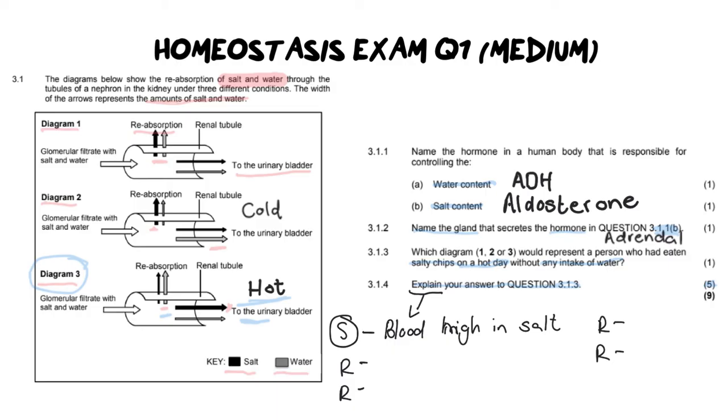And because the blood is high in salt, what you are going to do is you are going to secrete less aldosterone. Why? Because you don't need to keep and hold on to that aldosterone. And because you secrete less aldosterone, the nephron or the, if you want to refer to it as the proximal, distal or the collecting duct, the nephron becomes less permeable to salt.